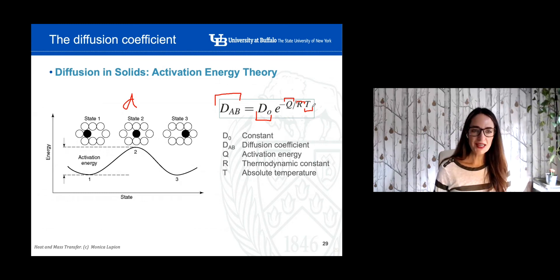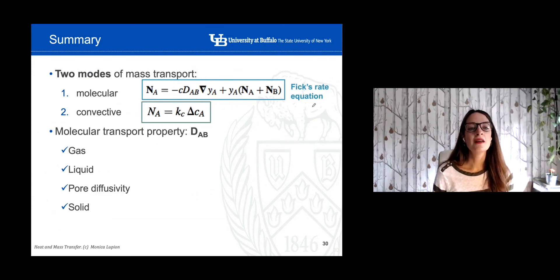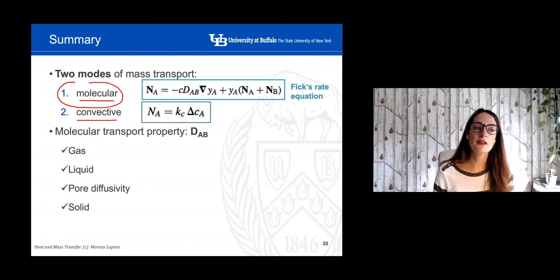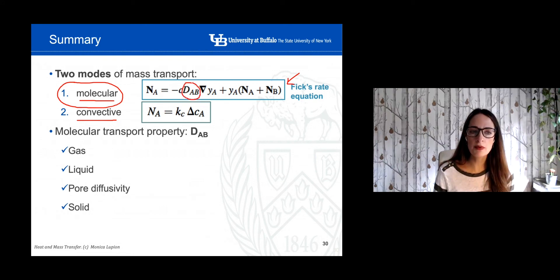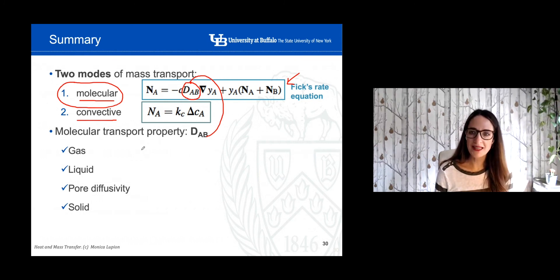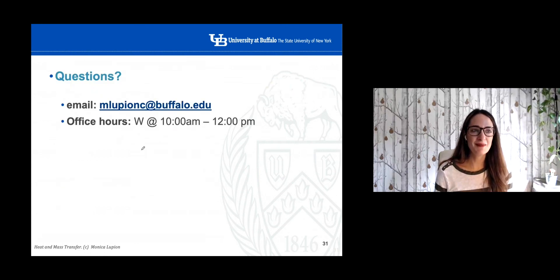In summary, we know that there are two modes of mass transfer: molecular diffusion and convective. For molecular diffusion, we can use Fick's law, and the key parameter is the diffusion coefficient, which can be determined either from tables in Appendix J or using the empirical equations covered in these videos. If you have any questions, please let me know. Thank you.